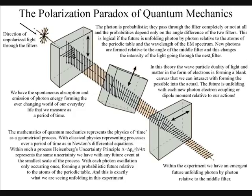This is logical if the future is unfolding photon by photon relative to the atoms of the periodic table and the wavelength of the electromagnetic spectrum. New photons are formed relative to the angle of the middle filter, and this changes the intensity of the light going through the next filter.